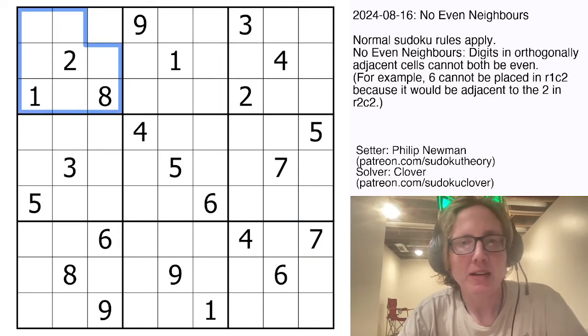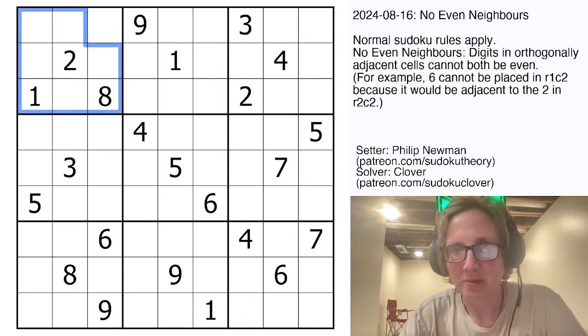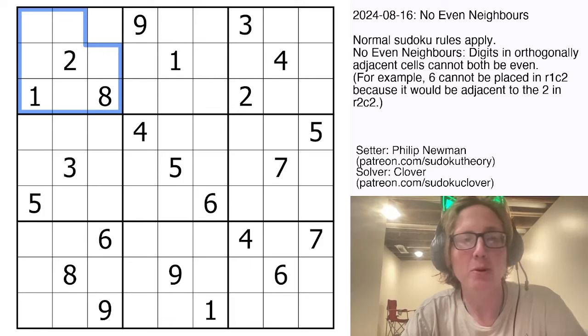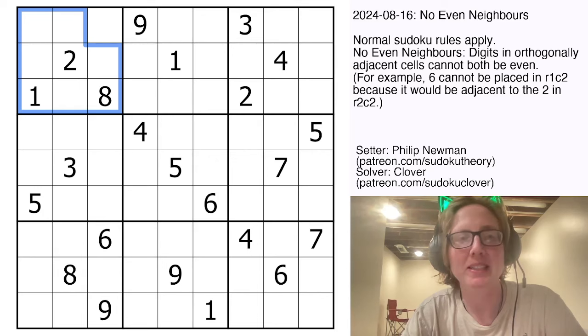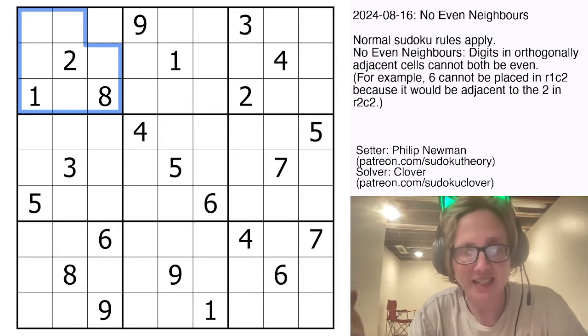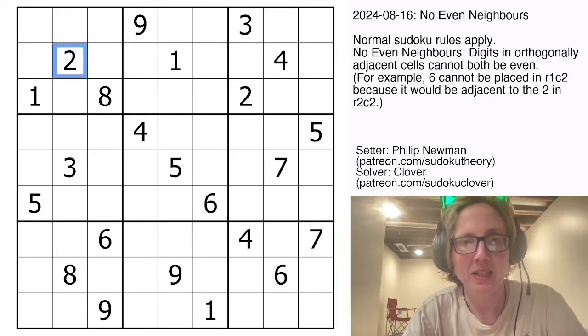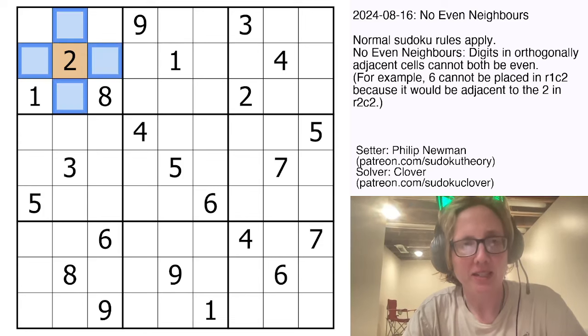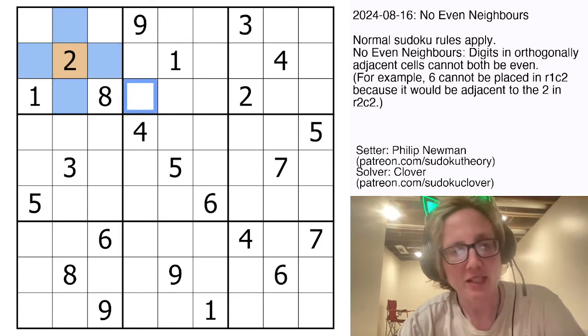And then in addition we have this No Even Neighbors rule, which is kind of an underutilized Sudoku variant, I think. The rule says that you can never have digits that are both even orthogonally adjacent, in other words directly next to each other. So because there's a 2 in this cell here, none of these cells that are directly touching that 2 can contain even digits.